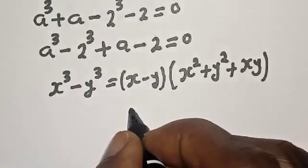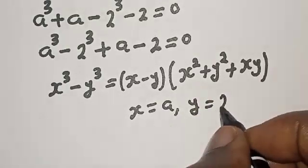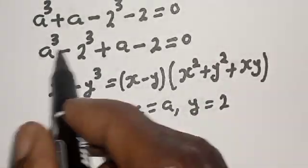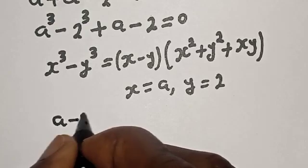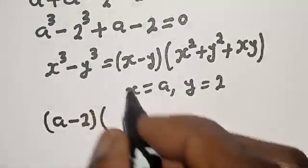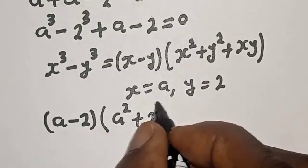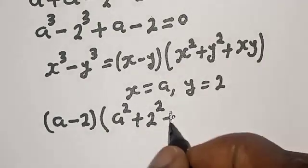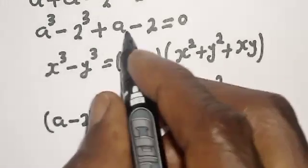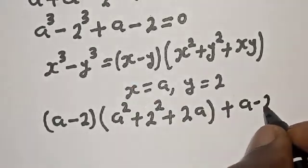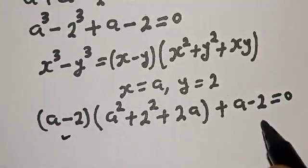In this case, x is equal to a and y is equal to 2. Substituting, we have (a minus 2)(a squared plus 2 squared plus 2a) plus (a minus 2) equals zero.